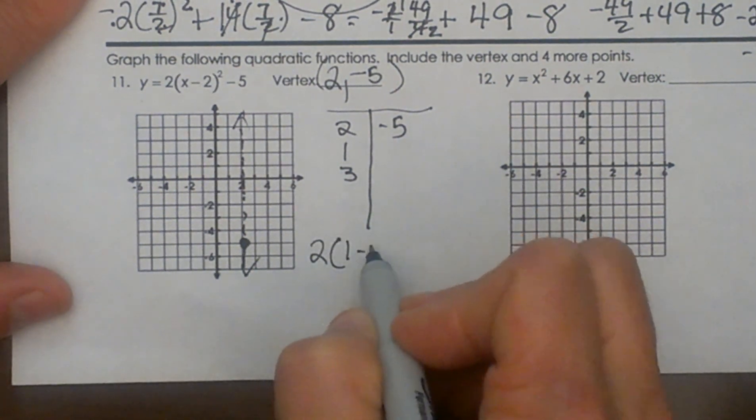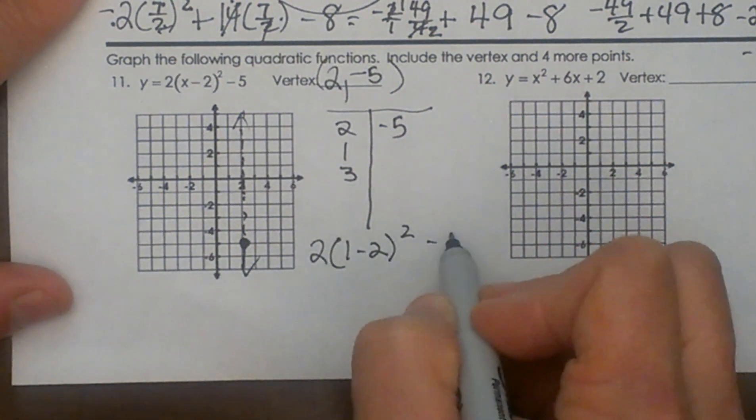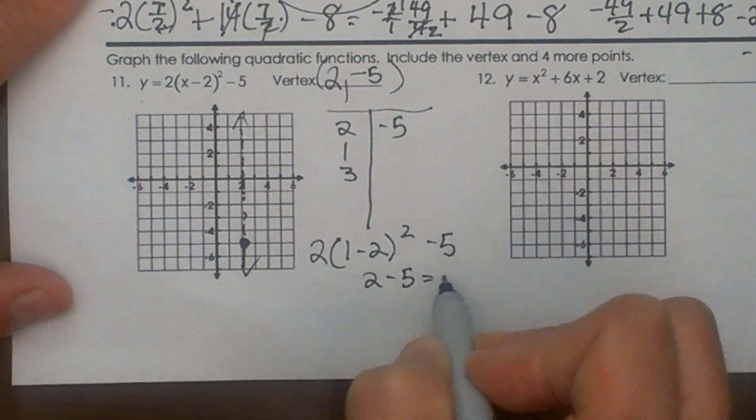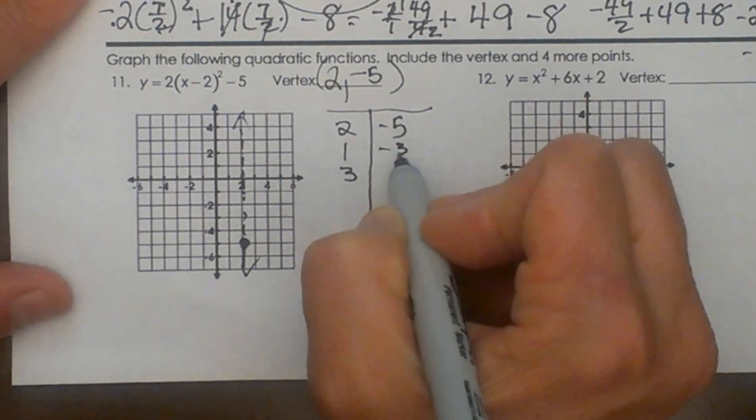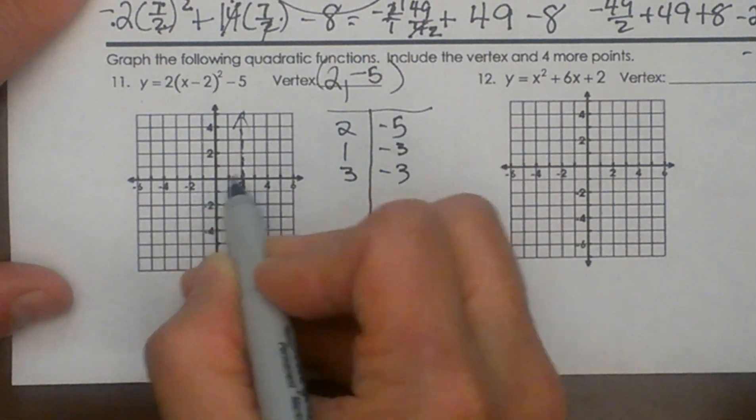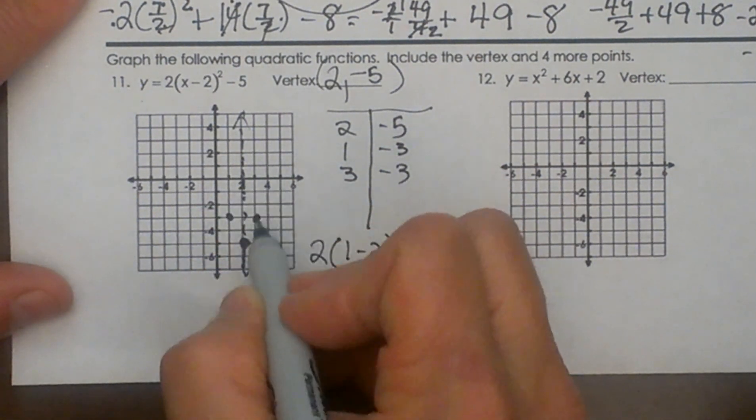Okay 2 times 1 minus 2 quantity squared minus 5. Okay that's going to give me a negative 1 but I'm going to square it and get a positive 1. So 2 minus 5 is negative 3. So I'm going to get a negative 3 out for both of my outputs. So that's 1 negative 3 and 3 negative 3.